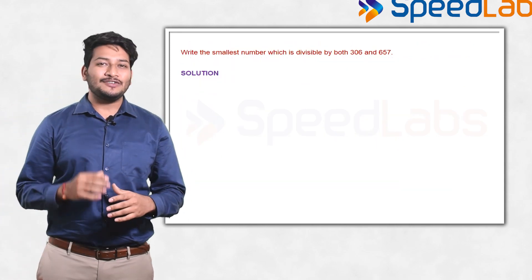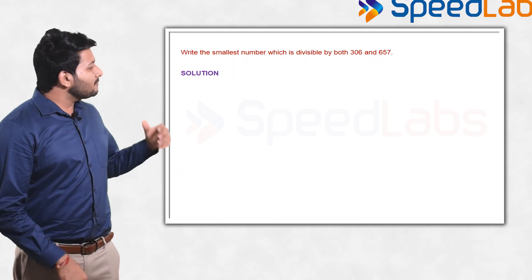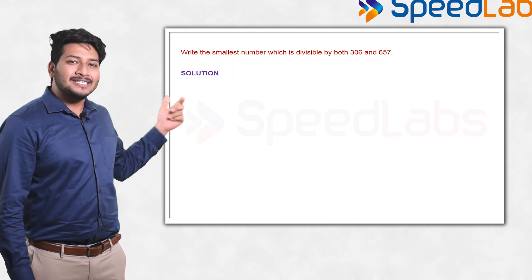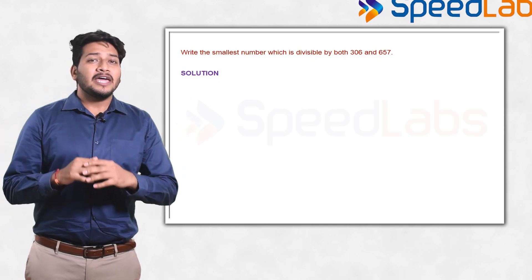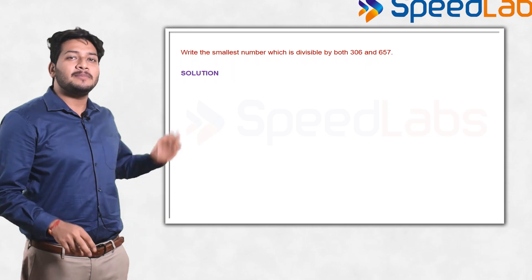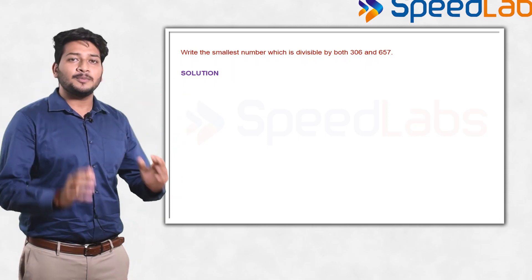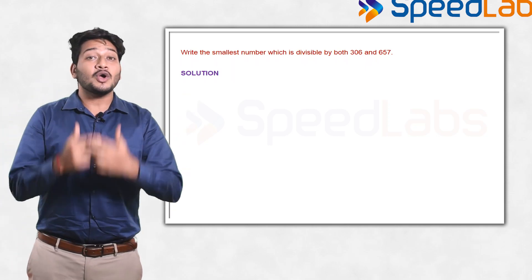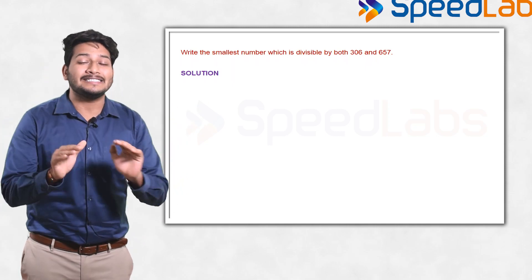The next problem is related to the concept of LCM. You are given two numbers which are 306 and 657, and now you are supposed to find the smallest number which is divisible by both.